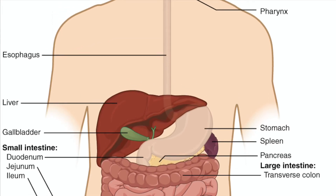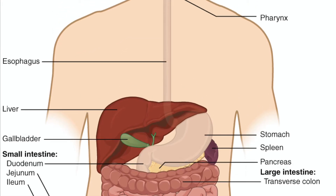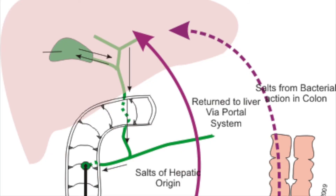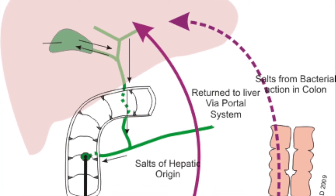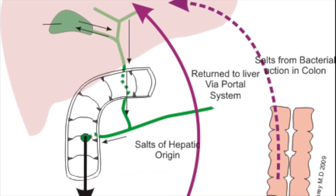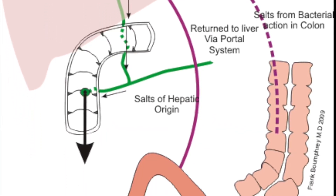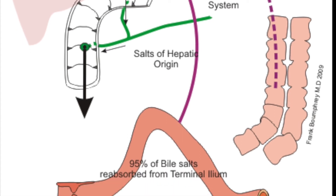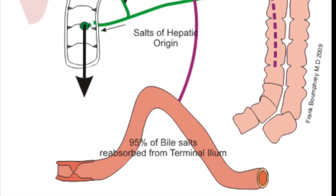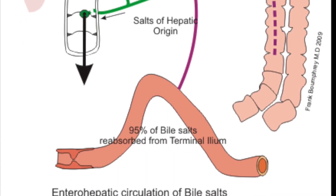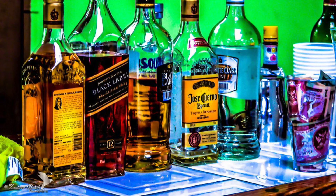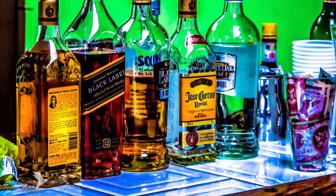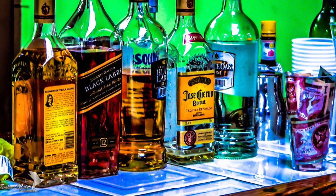These different functions include the production of bile, which helps carry away waste and break down fats in the small intestine during digestion. The liver also helps to detoxify poisonous substances such as ethanol from alcoholic drinks.